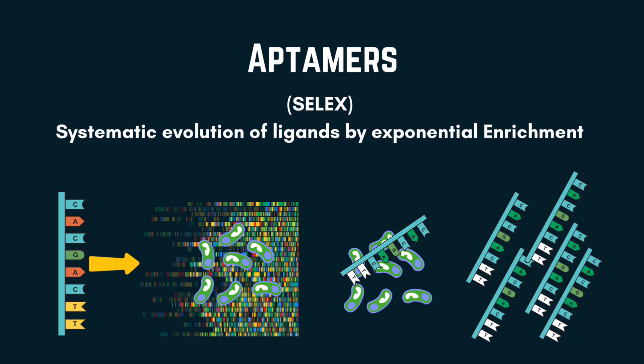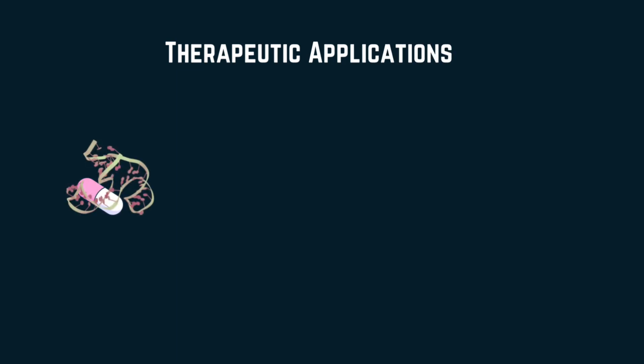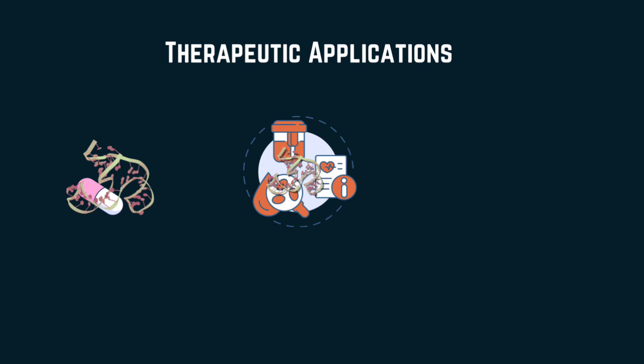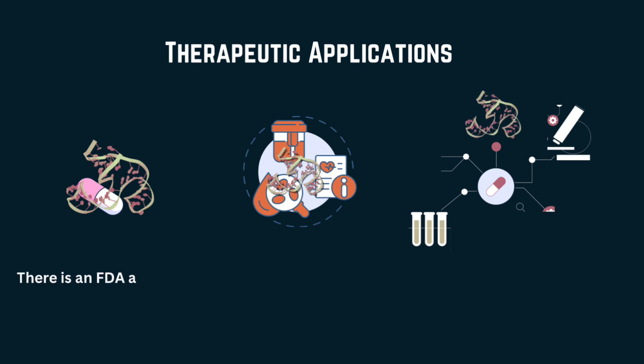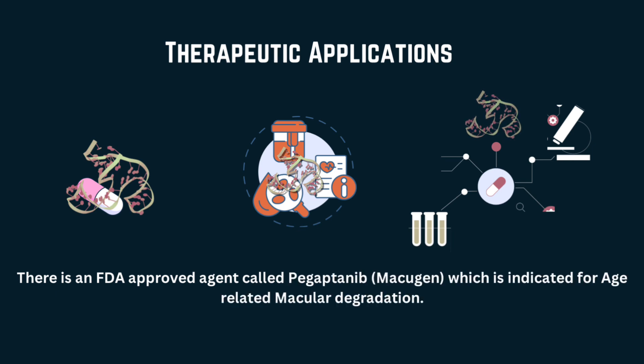Therapeutic uses of aptamers can vary. One, they can be used as drug delivery systems. Two, they can be used for detecting specific biomarkers. Three, they aid in drug development by acting as a tool to study molecular interactions during drug delivery processes. There is an FDA-approved agent called Pegaptinib-Macugen, which is indicated for age-related macular degeneration.